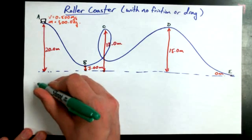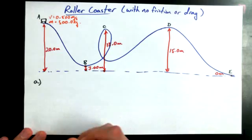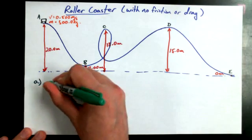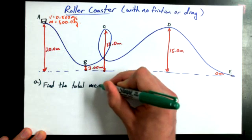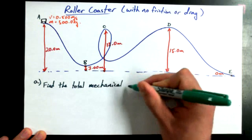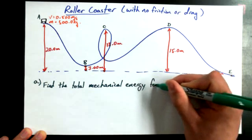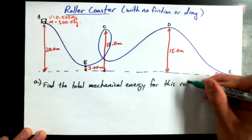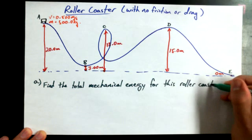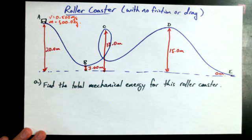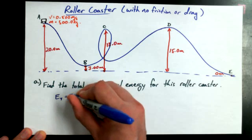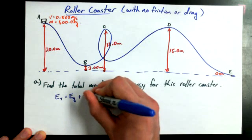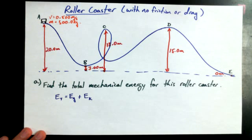Now that we've got the diagram done, the question is: find the total mechanical energy for this roller coaster. We said before that E_total equals E_g plus E_k. Is there a point on this roller coaster where we have enough information to find the total mechanical energy, and if so, what point is it — A, B, C, D, or E?